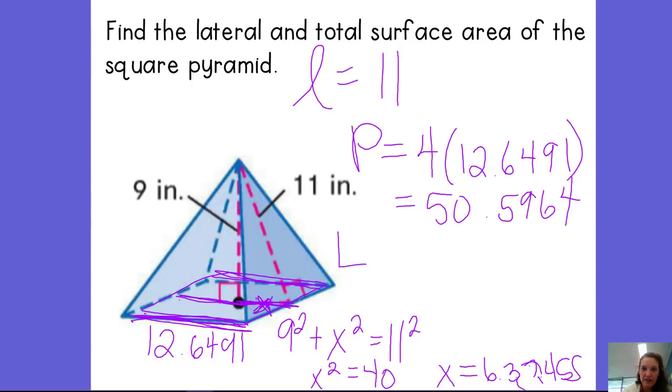And so the lateral surface area is just going to be 1 half times the perimeter of the base, which we just figured out was 50.5964, times the slant height, which is 11. 1 half times the perimeter of the base times the slant height, which gives you 278.3. So that's your lateral surface area.